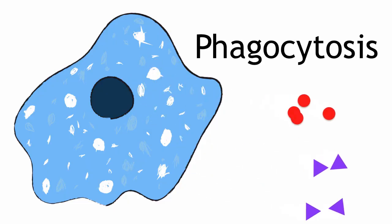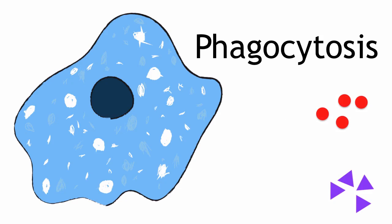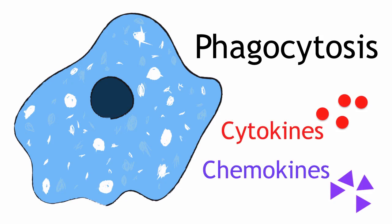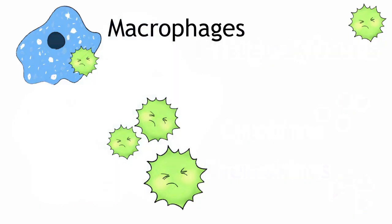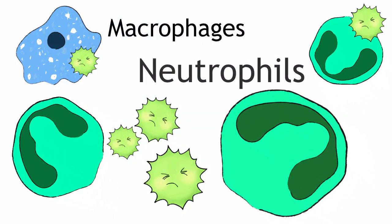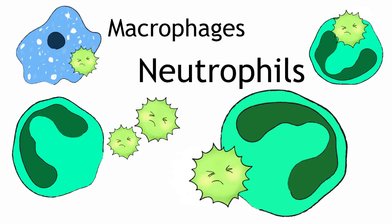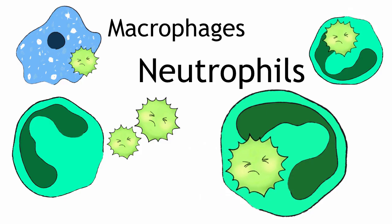At the same time, the macrophages produce molecules called cytokines and chemokines that alert the rest of the immune system to the presence of the invader. Different immune cells called neutrophils are recruited to your leg, and together with the macrophages, they help to destroy the bacteria.